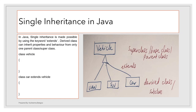In single inheritance, the superclass or parent class is at the top, and the subclass or derived class is below. We use the 'extends' keyword: for example, 'class Car extends Vehicle'. When we are inheriting from exactly one parent, it is single inheritance.